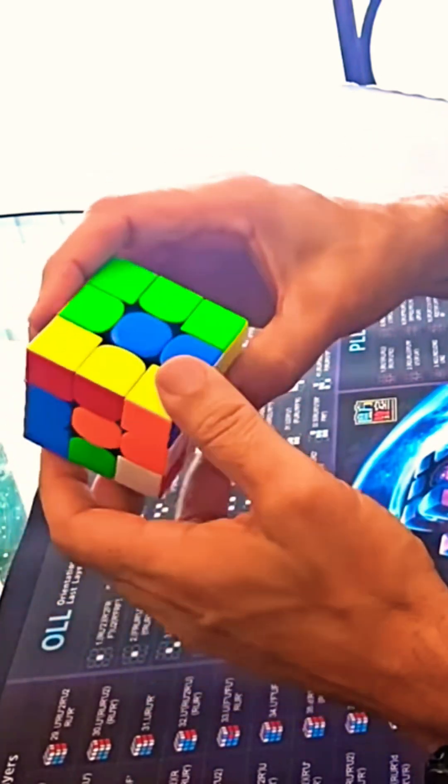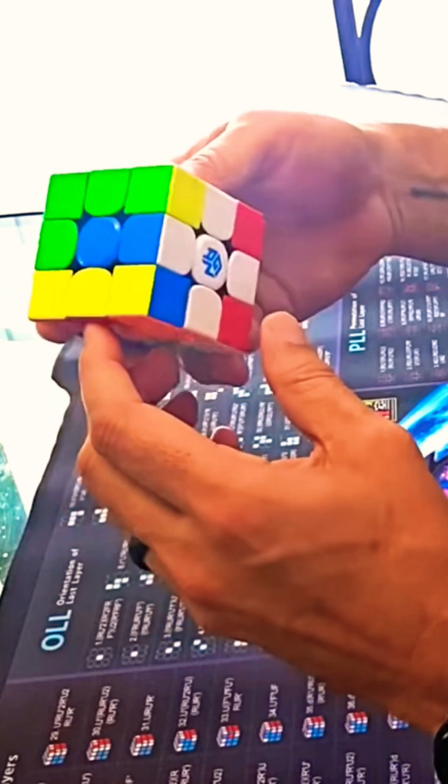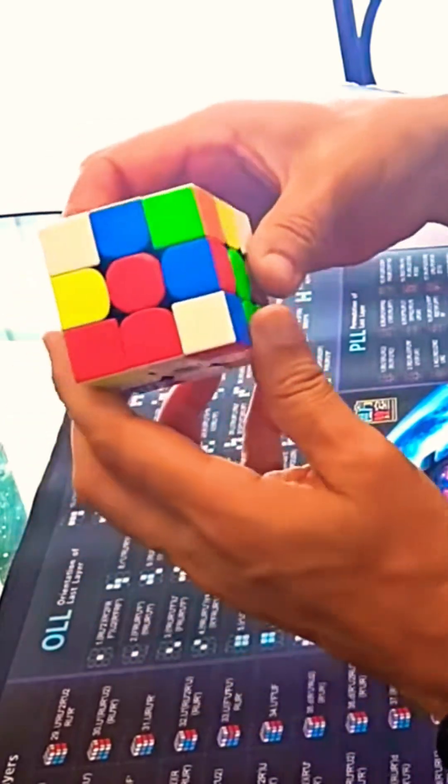Okay, so I got the white cross and then the edges are matching in the center. Insert corners into the right places to form the very first layer of the Rubik's Cube.